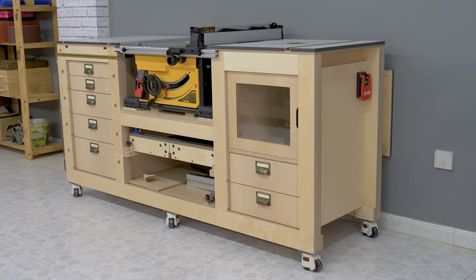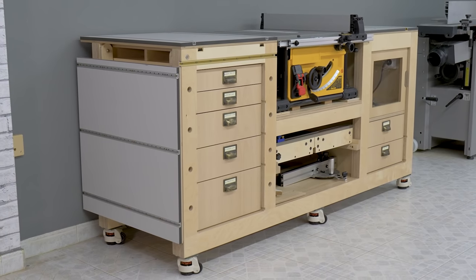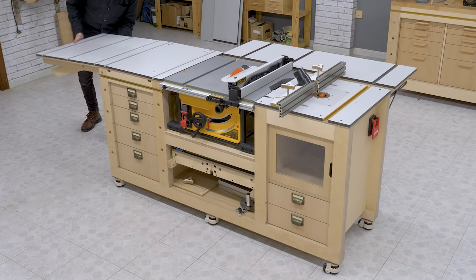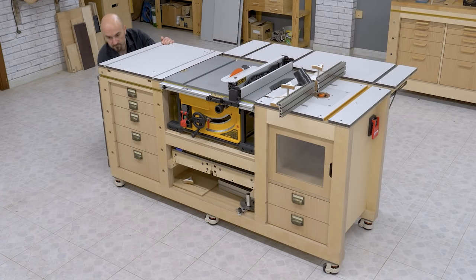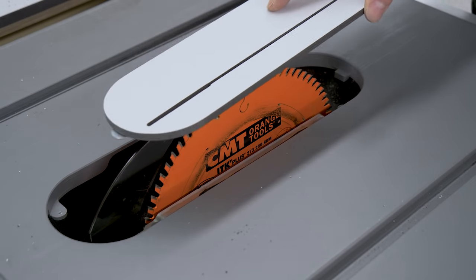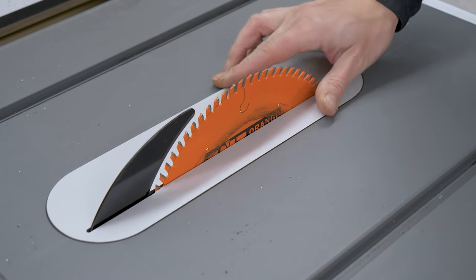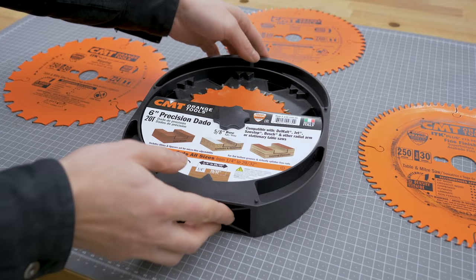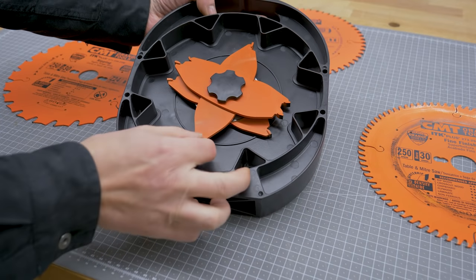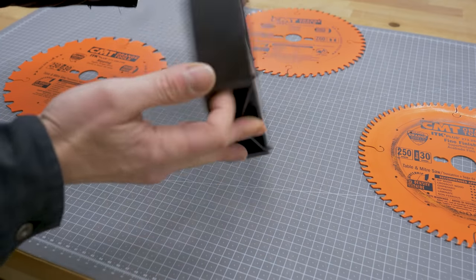As promised in my previous video on my new mobile workbench with a table saw and router table, I've made this new video to show you how to use and make new and improved zero clearance inserts to use with a saw, and I'll also showcase the different types of blades I use regularly, such as for example dado blades to make grooves.